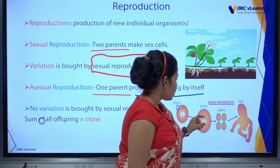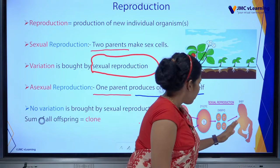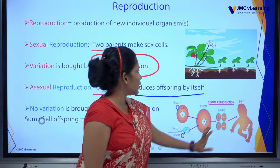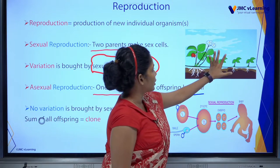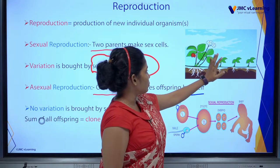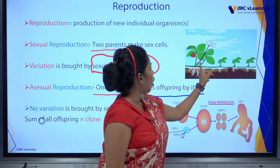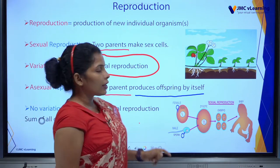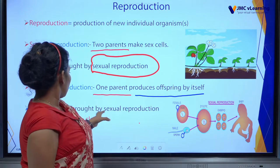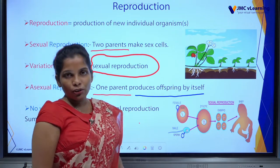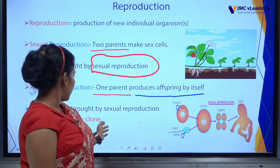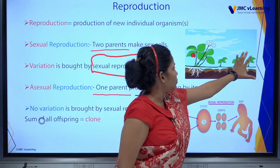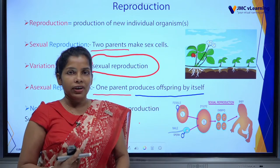Asexual reproduction involves one parent who produces offspring by itself — no variation is brought about. In sexual reproduction you can see female and male — two parents. The combination of female and male cells forms a zygote, then an embryo, and finally a baby. Asexual reproduction means one parent produces the offspring by itself, with no variation. The offspring produced are called clones.